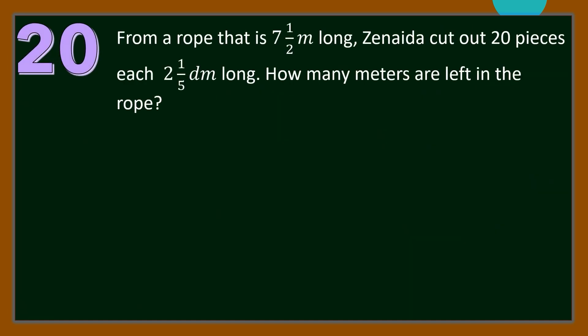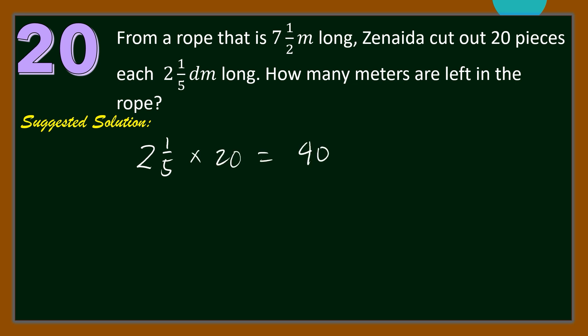Number 20. From a rope that is 7.5 meters long, Zenaida cut out 20 pieces each 2.5 decimeters long. How many meters are left in the rope? For our solution, since Zenaida cut out 20 pieces each with 2.5 decimeters length, let us multiply 2.5 times 20: that is 2 times 20 equals 40, plus 0.5 times 20 equals 10, giving 50 decimeters.